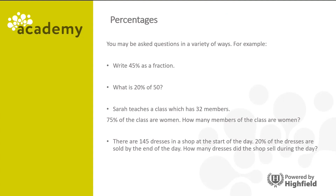Let's look at these questions. Write 45% as a fraction — remember it's 45 out of 100, so the denominator is 100 and the numerator is 45, giving 45 one-hundredths. What is 20% of 50? The calculator calculation is 50 divided by 100 times 20, but we can also divide by 5 to find 20%. So 50 divided by 5 equals 10.